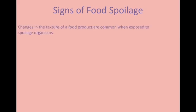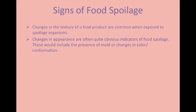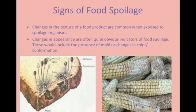Changes in the texture of a food product are common when exposed to spoilage organisms. In fruits, a slimy texture indicates that bacteria are present and have begun to produce carbohydrates. Another example would be soft vegetables, which is caused by the breakdown of cellulose by microorganisms. Changes in appearance are also often quite obvious indicators of food spoilage, including the presence of mold or changes in color or conformation.